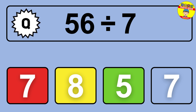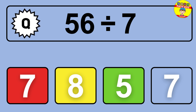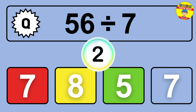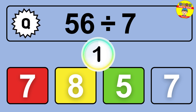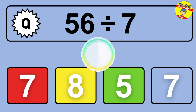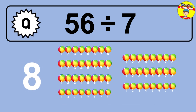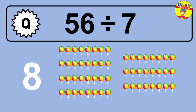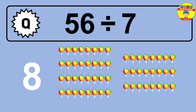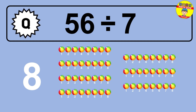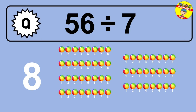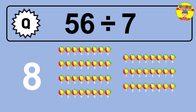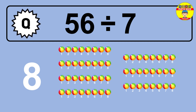56 divided by 7 is... time to think. Let's go to the solution. Divide the number 56 by 7. Each group contains 7 units, so dividing 56 by 7 results in 8 equal groups. Thus, the result is 56 divided by 7 equals 8.